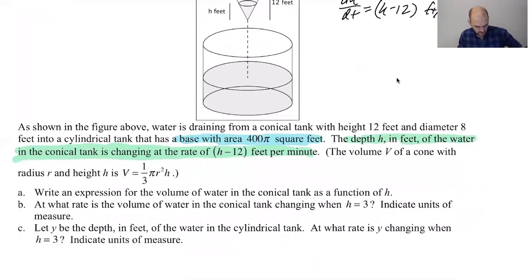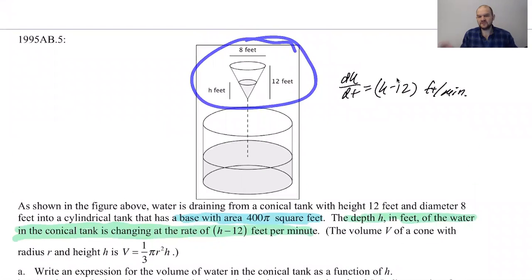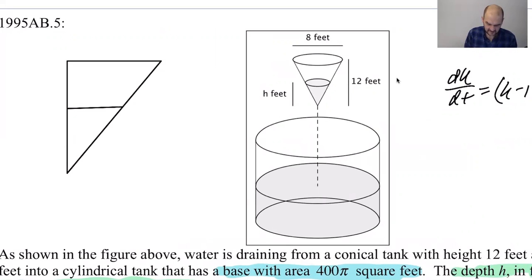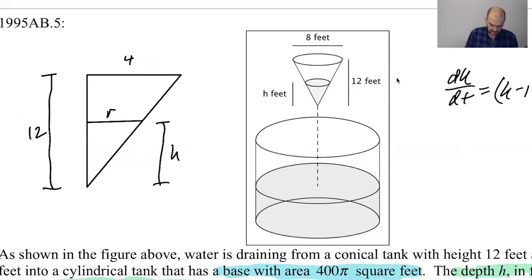All right. Let's solve this thing. Write an expression for the volume of water in the conical tank as a function of H. So I'm going to take this and I'm just going to draw the triangle. So the triangle that we need to use to really solve this. So four, and then this is 12. I'm going to call this R. I'm going to call this H.